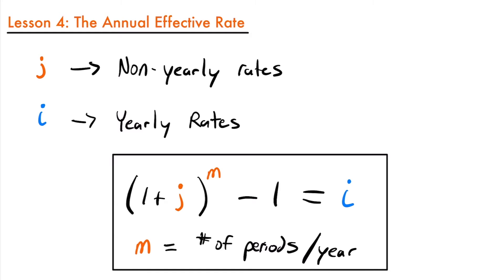Some accounts may pay semi-annual interest, quarter-annual interest, or monthly interest among other periods. When we look at these different interest rates, we typically represent non-yearly rates with the letter J, and yearly interest rates with I.